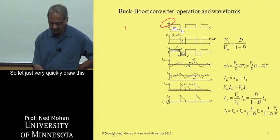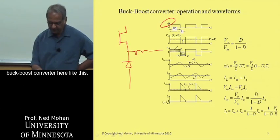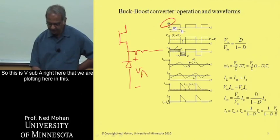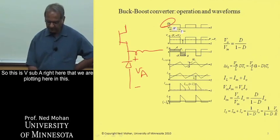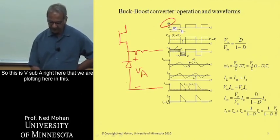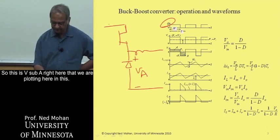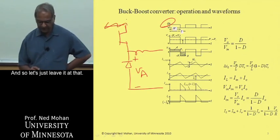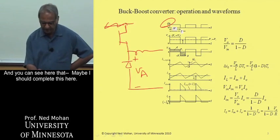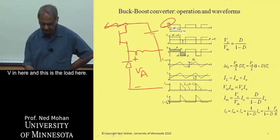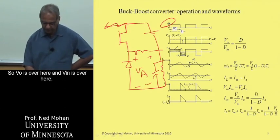And so let me just very quickly draw this buck-boost converter here like this. So this is V sub A right here, and that we are plotting here. You can see here that maybe I should complete this here. V in here, and this is the load here. So VO is over here, and V in is over here.